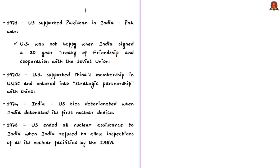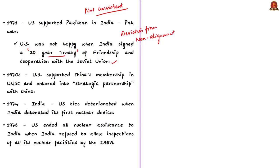In the 1971 war between India and Pakistan, the United States supported Pakistan, as the US was unhappy when India signed a 20-year treaty of friendship and cooperation with the Soviet Union. The US felt India had deviated sharply from its previous position of non-alignment. Also, by the 1970s, the US supported China's membership again in the United Nations Security Council and entered into a strategic partnership with China, when there was a change in Chinese leadership favorable to the US. The author also notes how China then betrayed India despite India's earlier support to China.